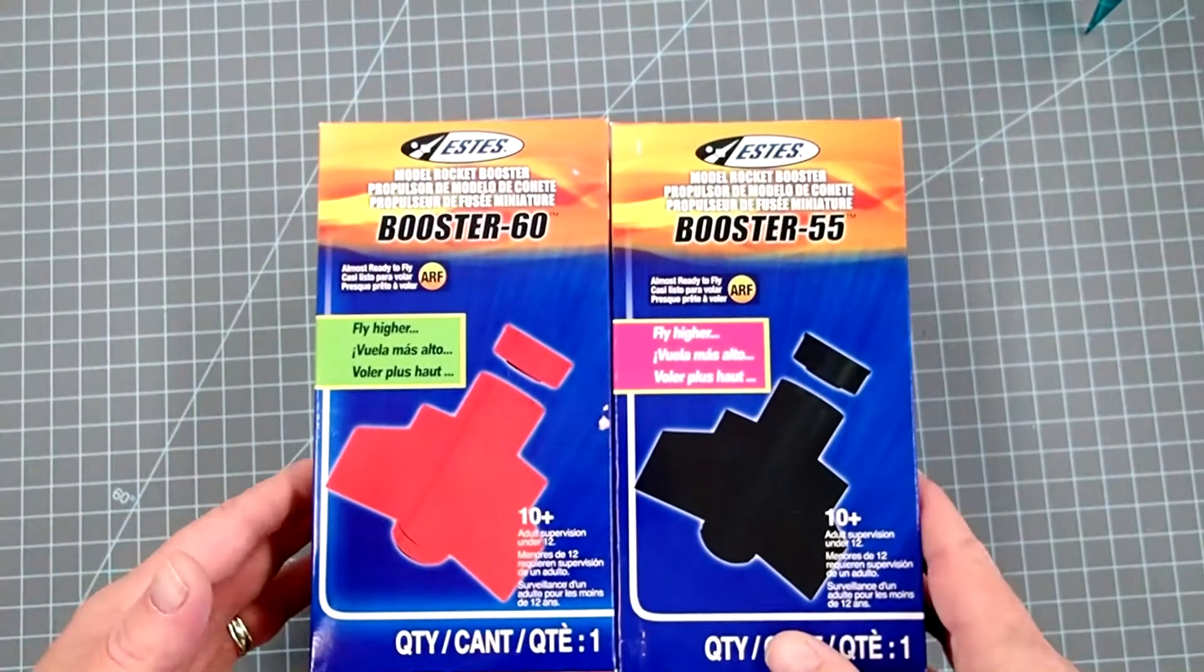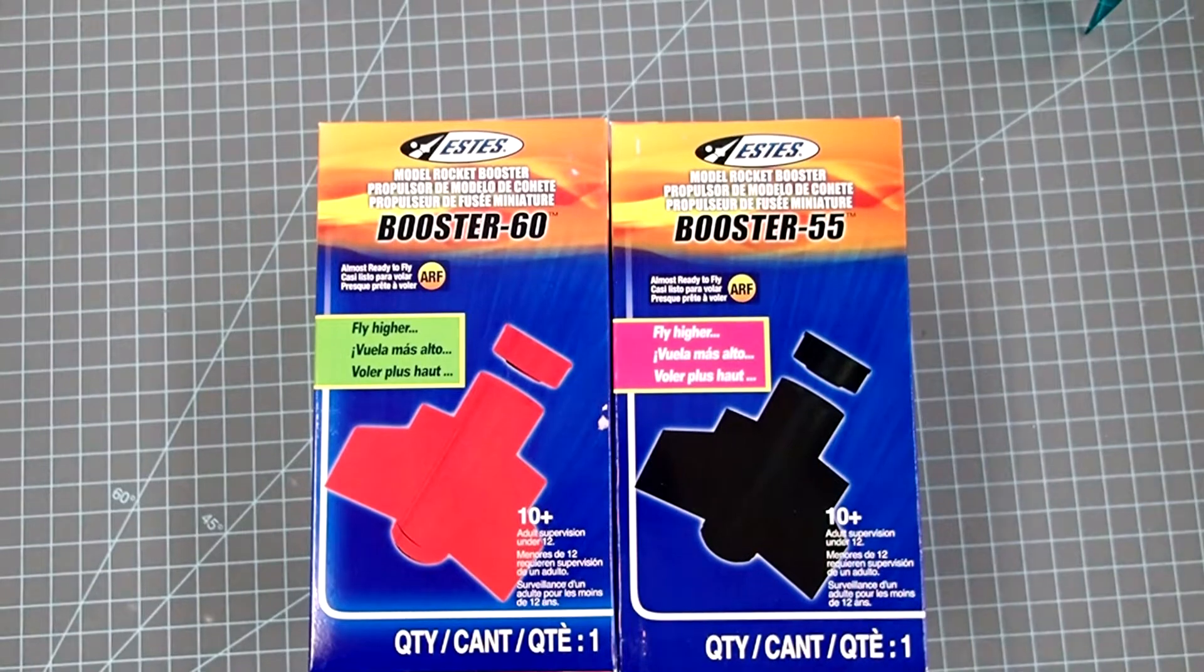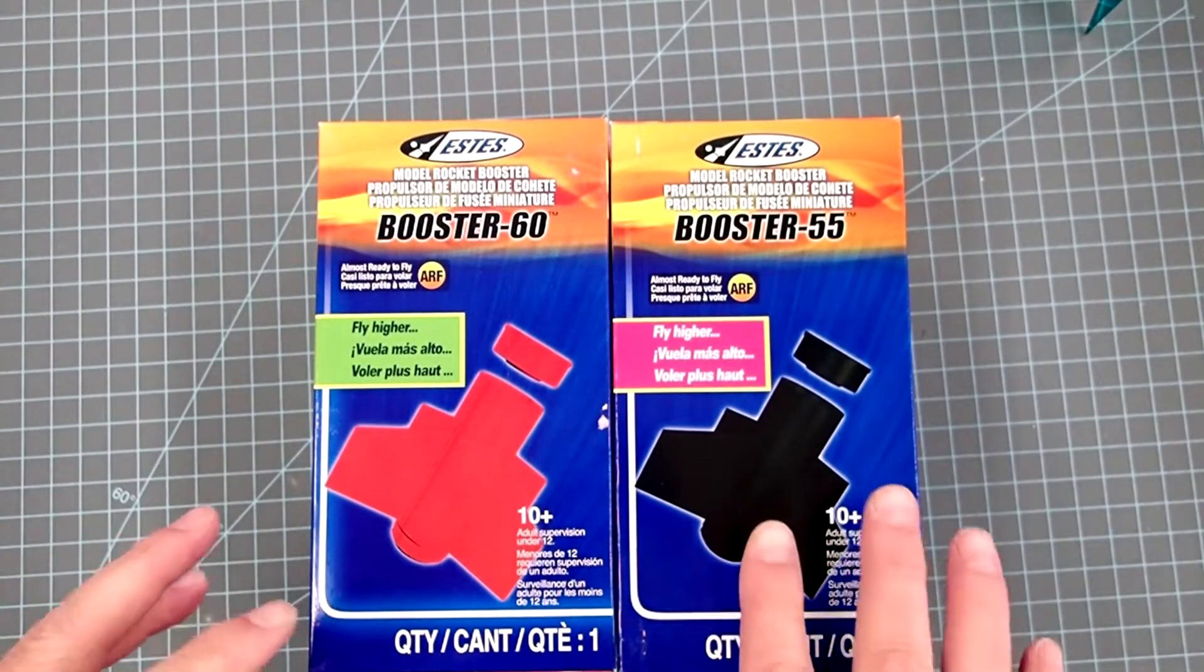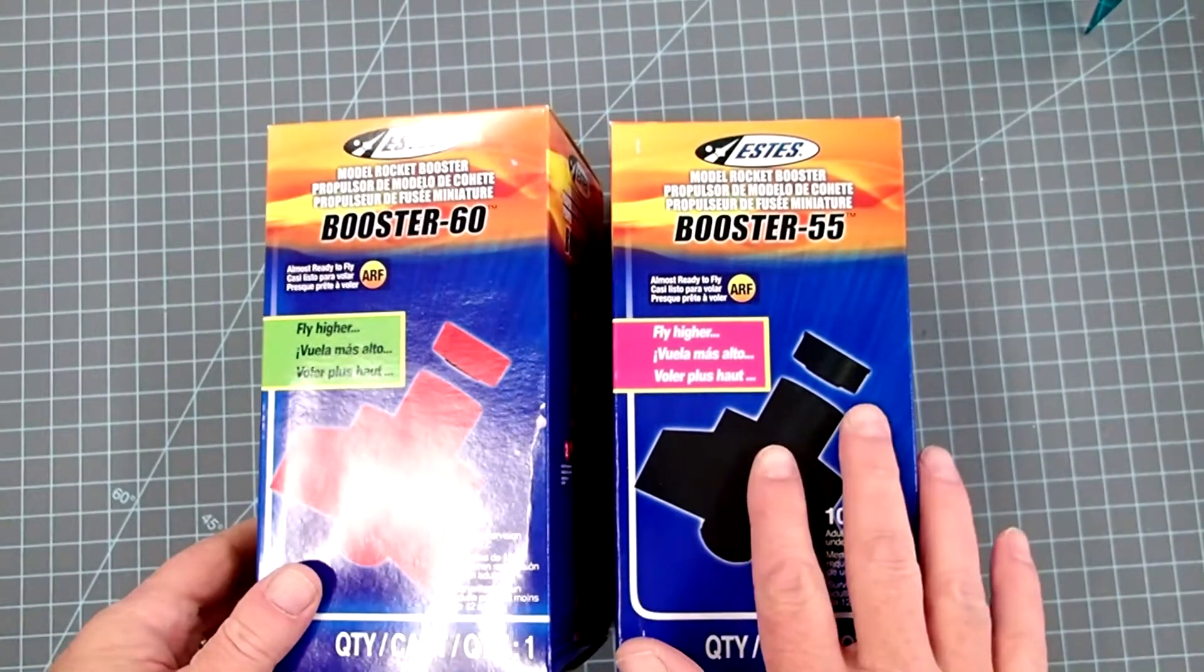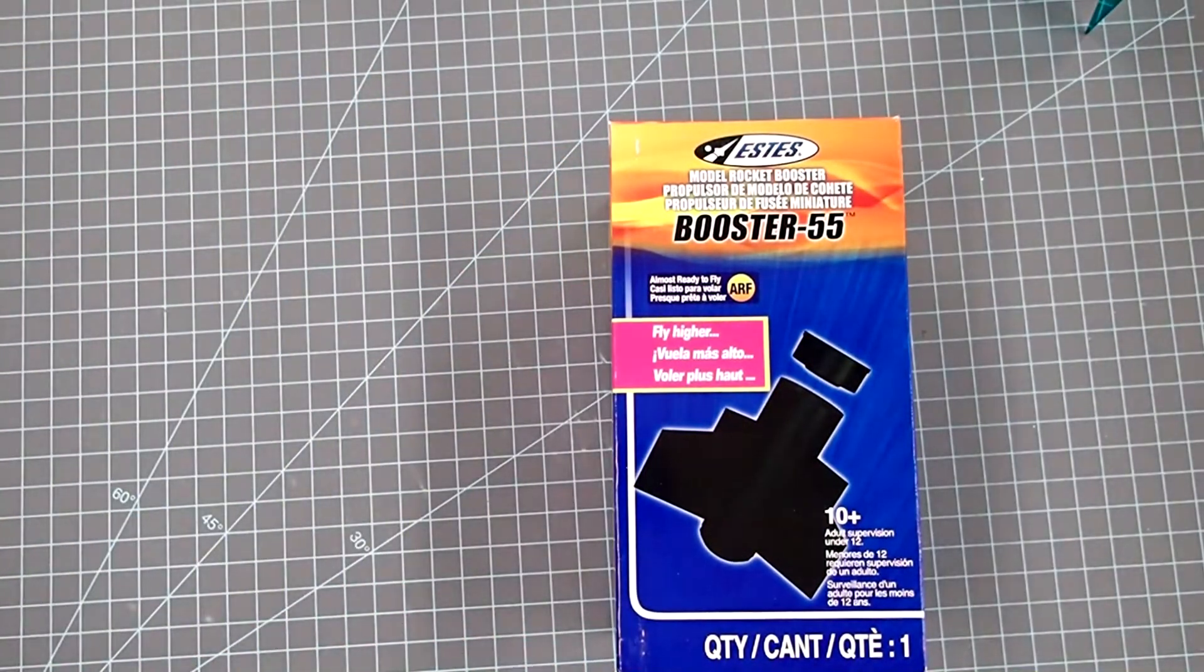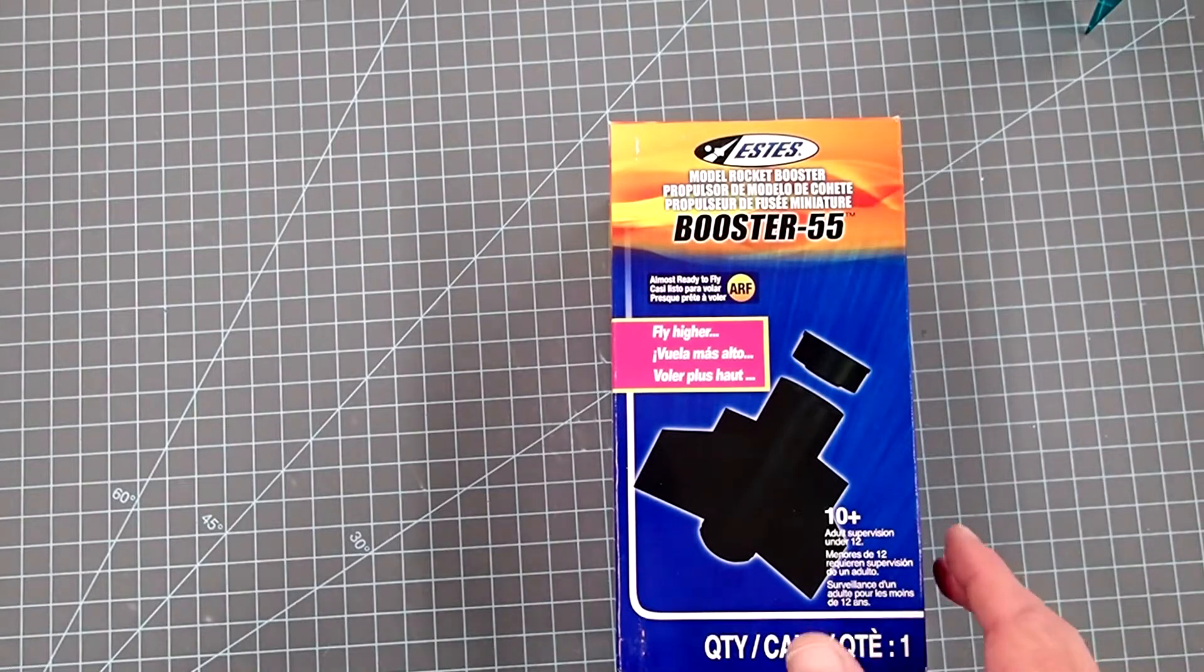Okay, they have two sizes here. They build just the same. I'm just going to build the 55 one and this is for any of the ARF rockets that are based on a BT-55 body tube or airframe.